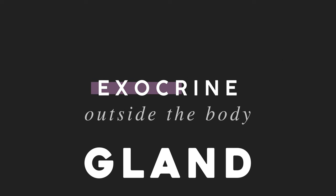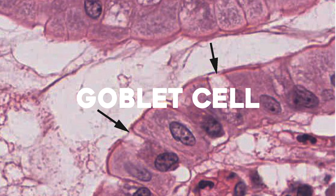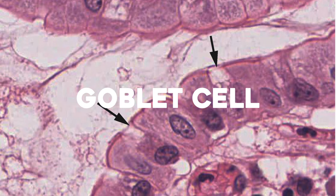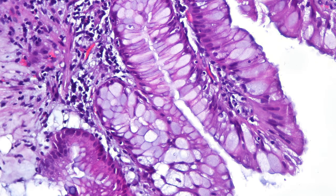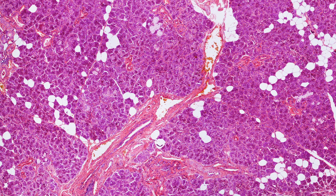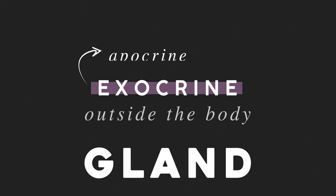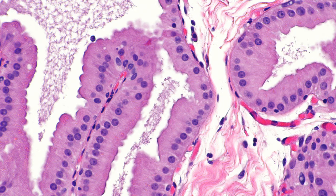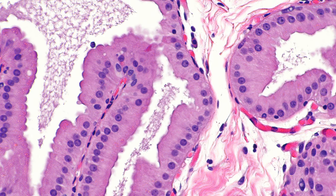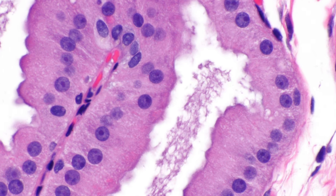Exocrine glands pump substances outside the body or into different cavities within the body. For instance, goblet cells in the GI tract secrete a protective layer of mucus out into the intestine, which is technically outside of our bodies. Or there are salivary glands — they secrete a bunch of enzymes and proteins into the saliva. Those enzymes aren't communicating anything like a hormone would, so it's an exocrine gland. Another example are apocrine glands, a subtype of exocrine gland that gives off odorants — something that carries a smell is more useful if it travels outside the body to a nose, so it's an exocrine gland, not endocrine.